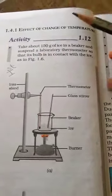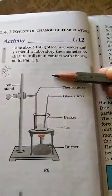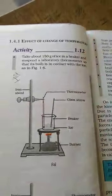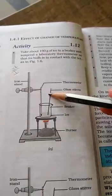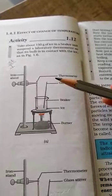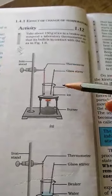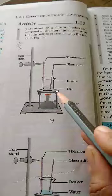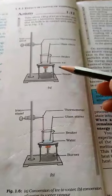See, this is the figure. Activities - Effect of change of temperature. Take about 150 grams of ice in a beaker. This is the ice, and suspend a laboratory thermometer so that its bulb is in contact with the ice as shown in the figure. See, this is the iron stand, this is the thermometer, this is the glass stirrer, this is the beaker with ice, and the burner. First process: ice is kept here in the beaker.